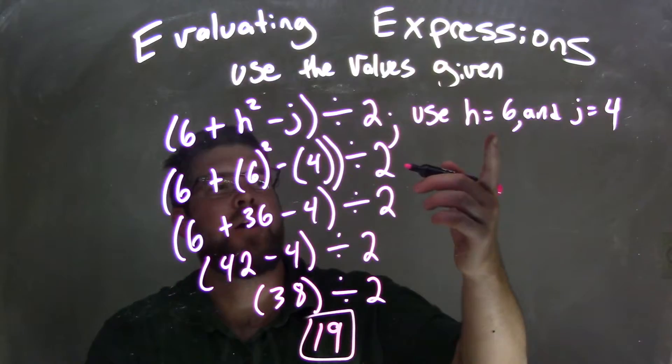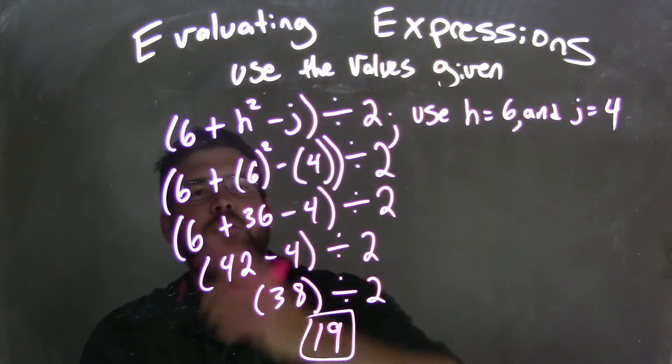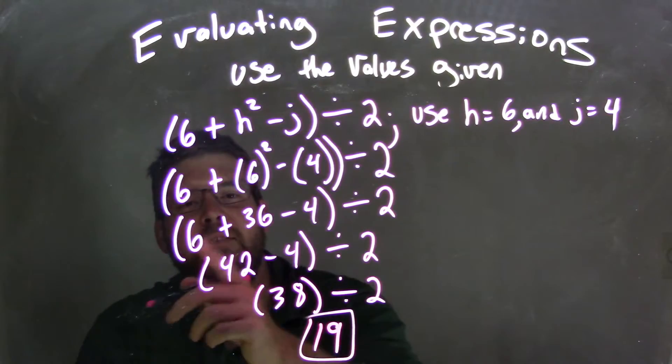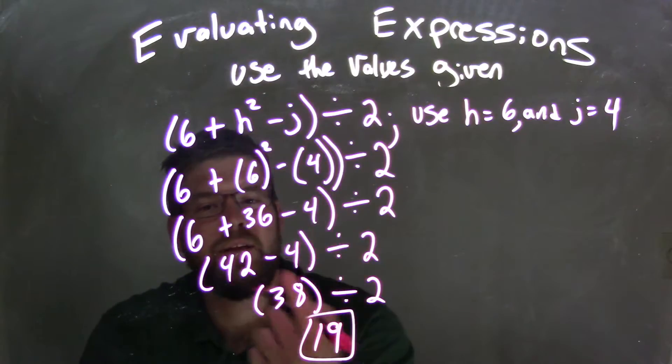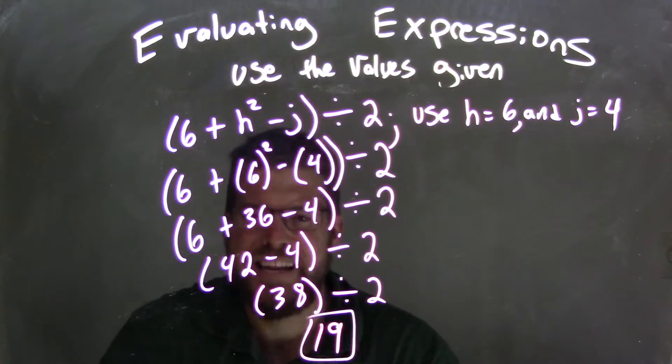And so, again, quick recap, we have our variables, right? We substituted them in, the 6 and the 4 for h and j, and then 6 squared is 36, and then we added 6 plus 36 is 42, subtracted 4 because it was inside the parentheses, to get 38, and we divide that by 2 to get 19. Thank you.